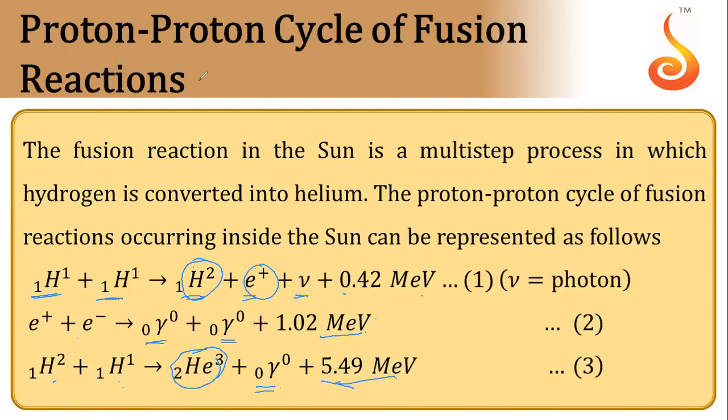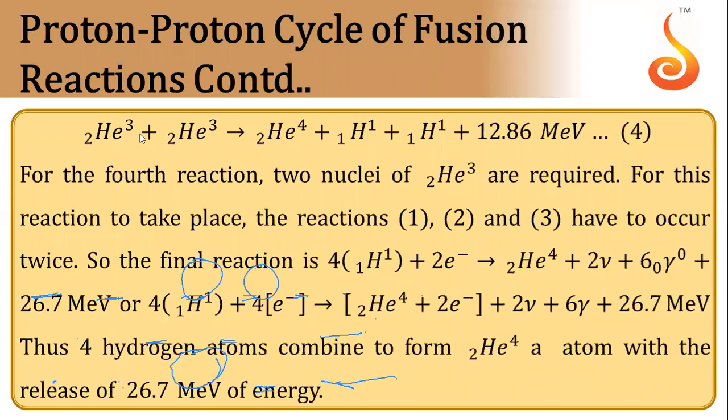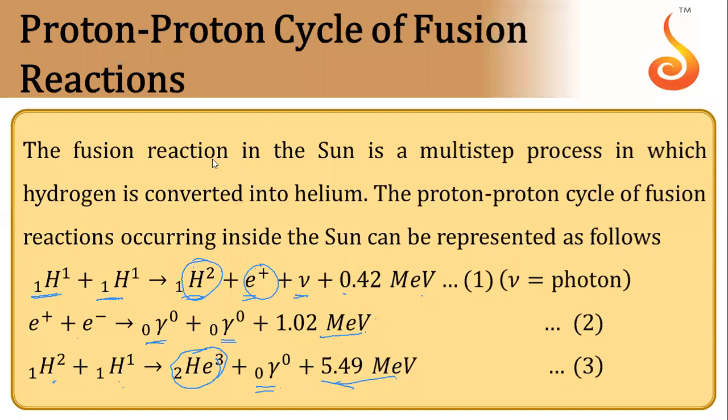In the next step, this helium-3 nuclei will again combine with one more helium nuclei. Till now, from the first step to the third step, only one helium-3 nuclei has been formed, so these whole steps must be repeated twice.